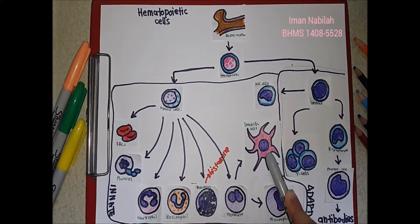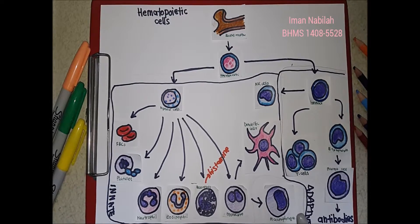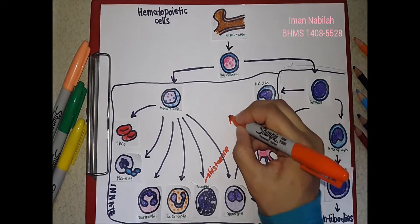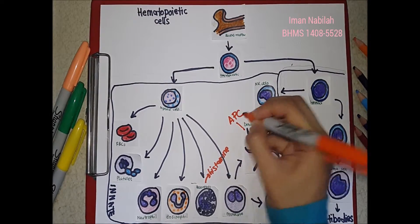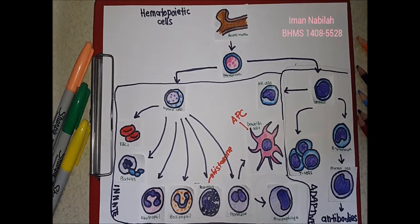Dendritic cells serve a sentinel function by engulfing cells and material, breaking it down, and displaying components on their cell surface. As a result, they are often referred to as APCs, or antigen presenting cells. NK cells function in lysis of some virally infected cells; they are lymphocytes that attack cells with defective cell markers.